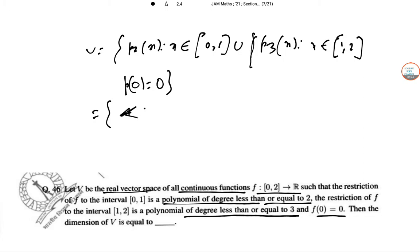This is x belongs to [0,1] union {1, x, x², x³}, x belongs to [1,2].